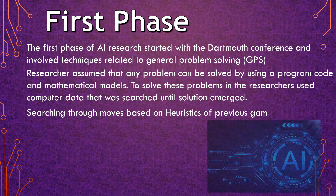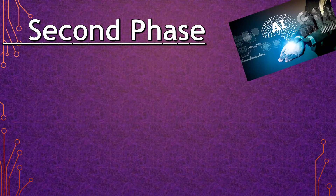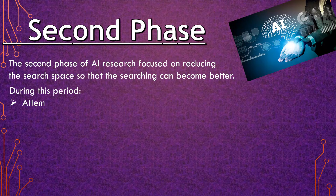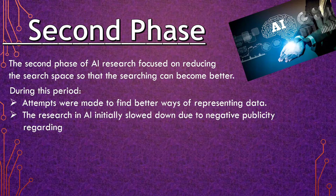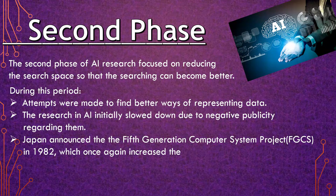Searching through moves based on heuristics of previous games would allow the computer to find the best result. The second phase of AI research focused on reducing the search space so that searching could become better. During this period, attempts were made to find better ways of representing data. Research in AI initially slowed down due to negative publicity. Japan announced the fifth-generation computer system project in 1982, which once again increased interest in the development of AI systems.